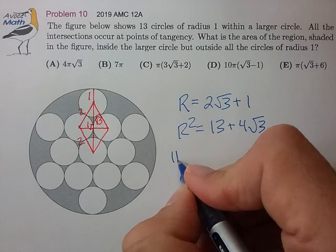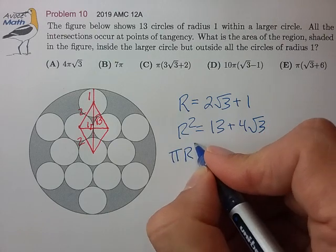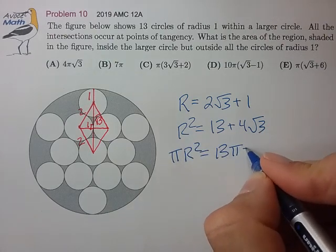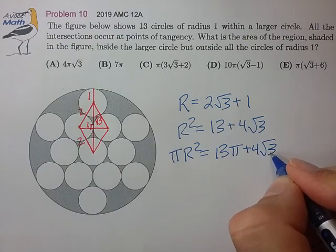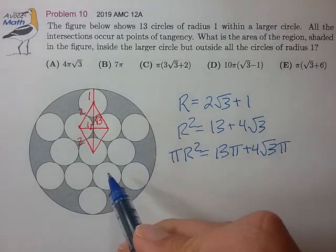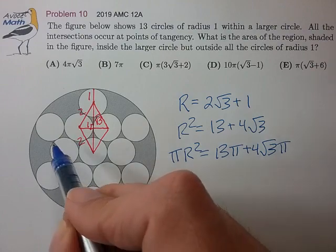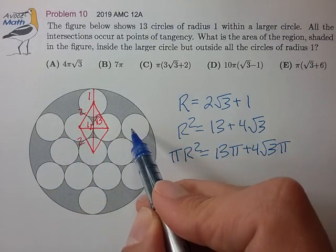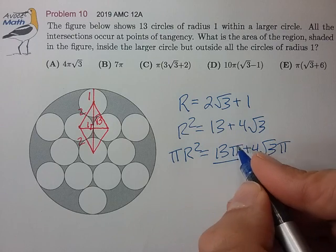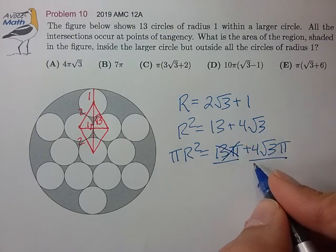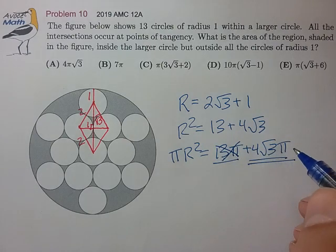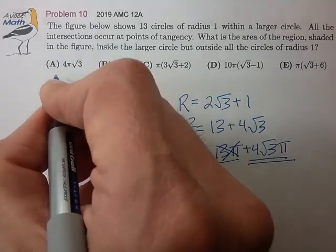The area of the large circle is pi r squared, and from that we want to subtract the area of the 13 smaller circles. Conveniently that area is just 13 pi, which leaves us with the area of the shaded region: 4 root 3 times pi, for choice A.